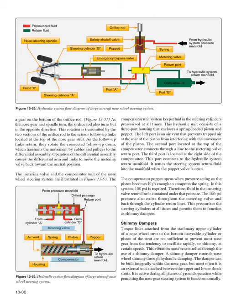The metering valve and compensator unit are illustrated in Figure 13-53. The compensator unit keeps fluid in the steering cylinders pressurized at all times. It consists of a three-port housing enclosing a spring-loaded piston and poppet. The left port is an air vent preventing trapped air from interfering with piston movement. The second port at the top connects through a line to the metering valve return port. The third port at the right side connects to the hydraulic system return manifold, routing steering system return fluid into the manifold when the poppet valve is open. The compensator poppet opens when pressure acting on the piston becomes high enough to compress the spring — in this system, 100 pounds per square inch is required.